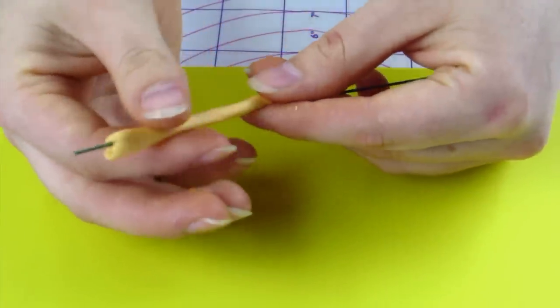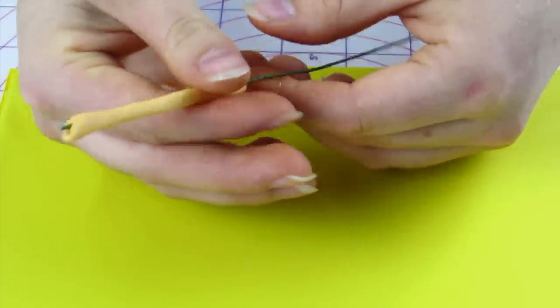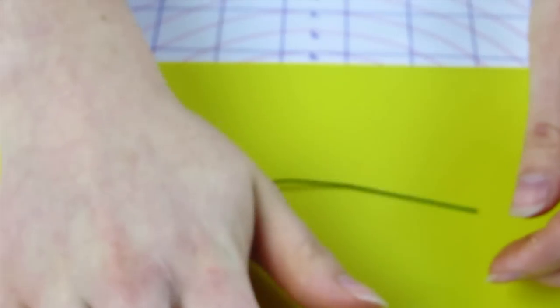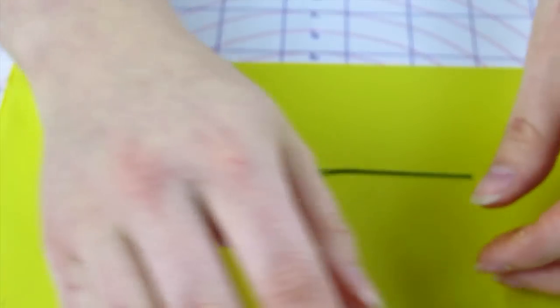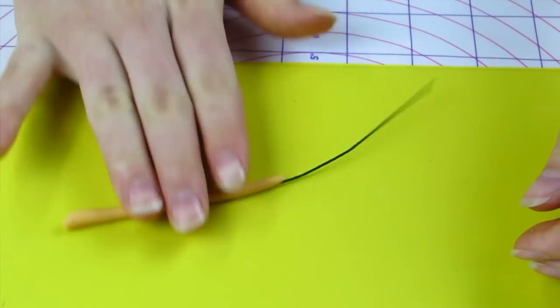You're just going to really want to gently work it up the wire without pinching it too hard. And then to give it a nice even consistency so it's not thick and thin in different spots I'm just going to give it a light roll with my hand. And you can set that aside to dry.